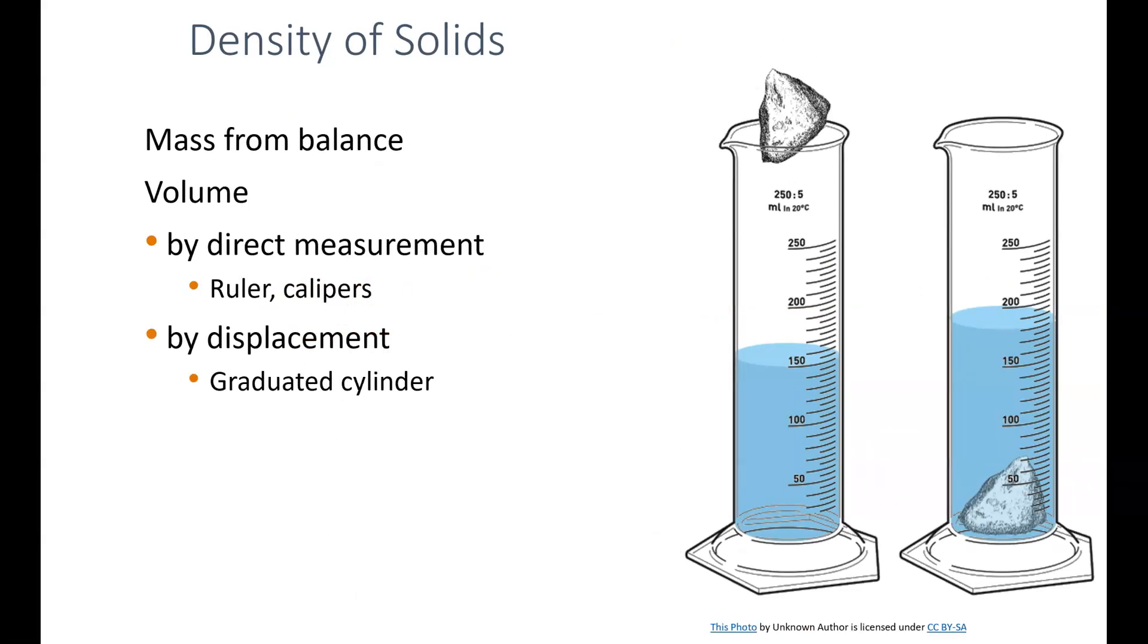It's important to keep in mind how we find the density of these substances. We want to make sure we know how to find our mass and our volume. Mass we're going to find directly, typically from a balance. For volume, you can find it by direct measurement—you can use a ruler or calipers to measure an object—but if you have an irregular object that's not easy to measure, then you need to use displacement. You use a graduated cylinder to find the displacement of an object.